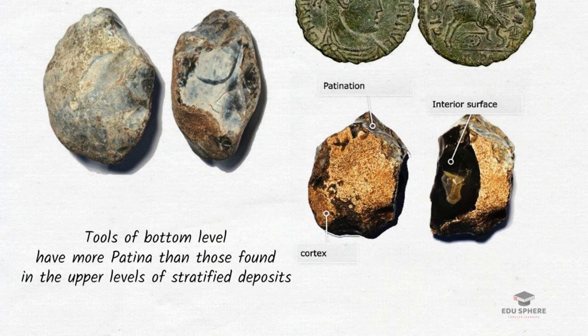Scientists have found in stratified deposit sites that tools from bottom levels have more patina than tools from upper levels. It was therefore concluded that tools of lower levels are older because they have more patina. On the basis of the amount of patina, relative ages can be assigned to stone artifacts fashioned by man.